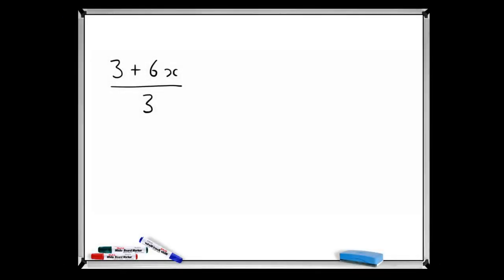Here we have a simple algebraic fraction, which we often like to simplify. The way we do that is to look for things that are common to the top and bottom lines and cancel them out.